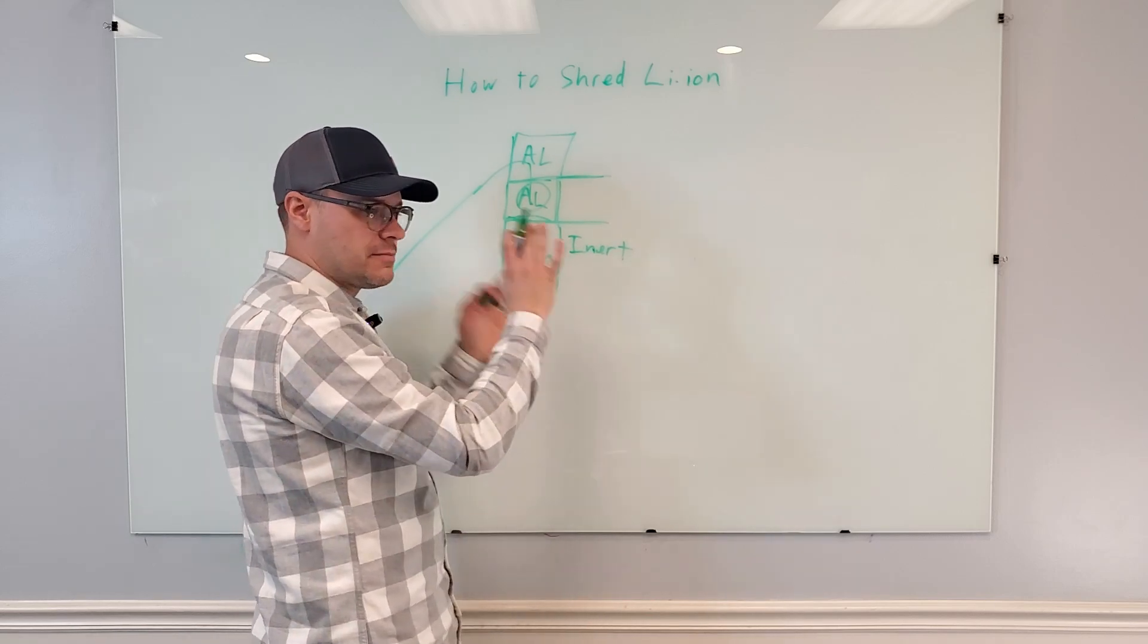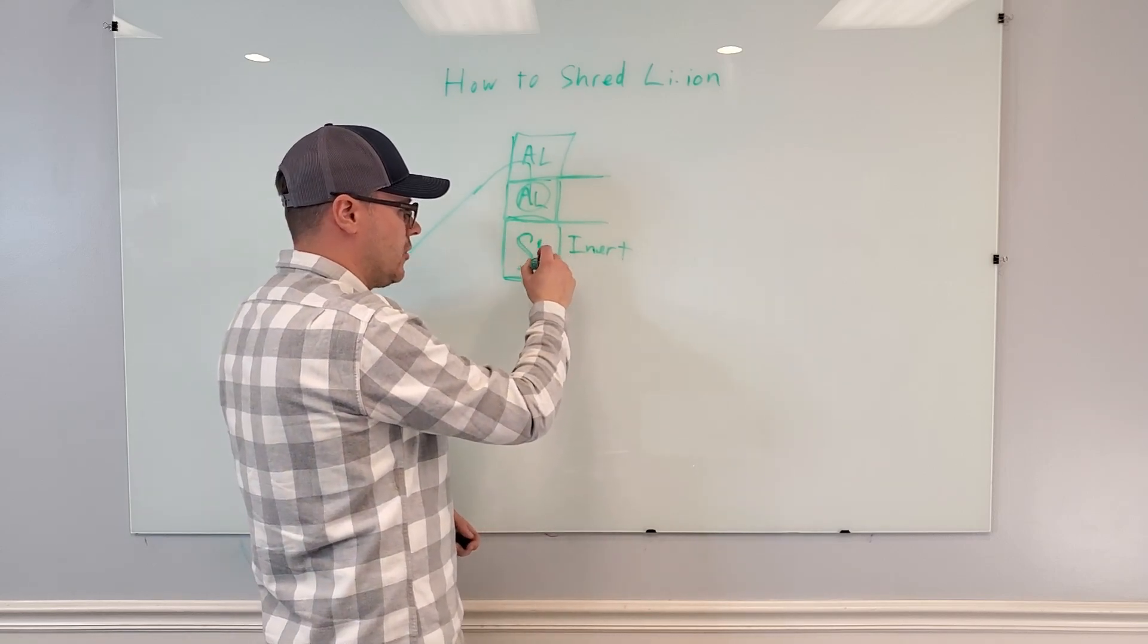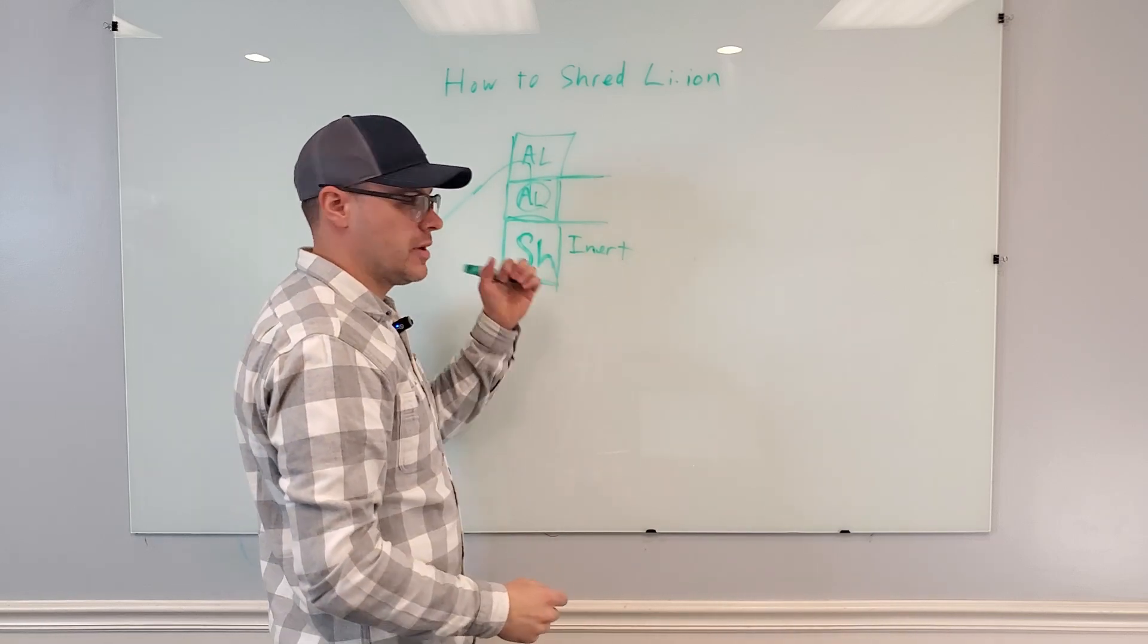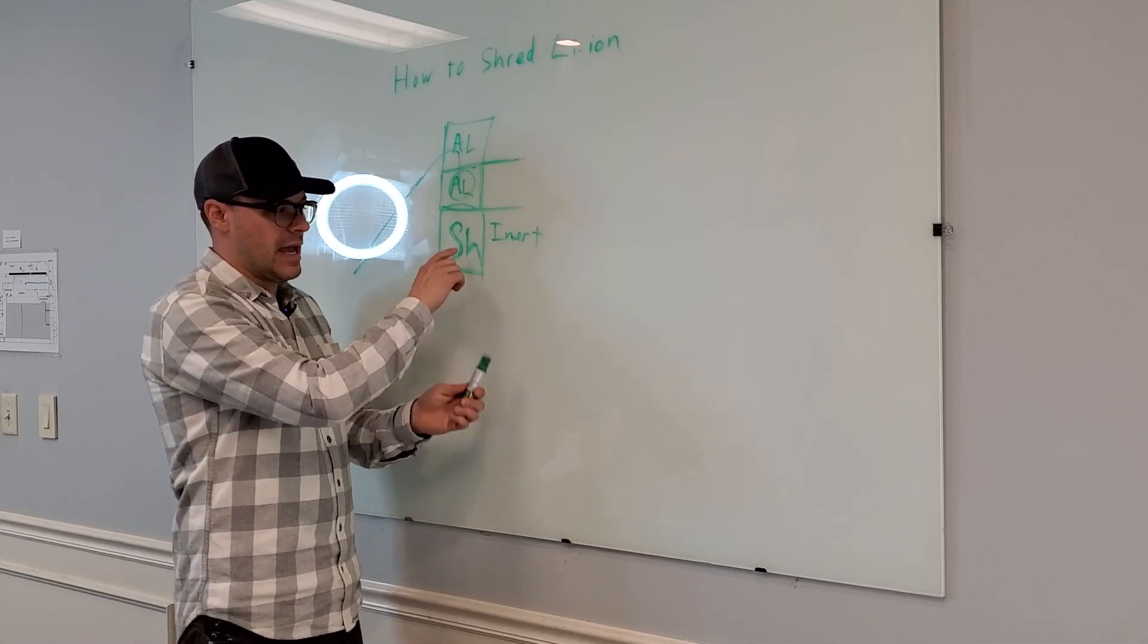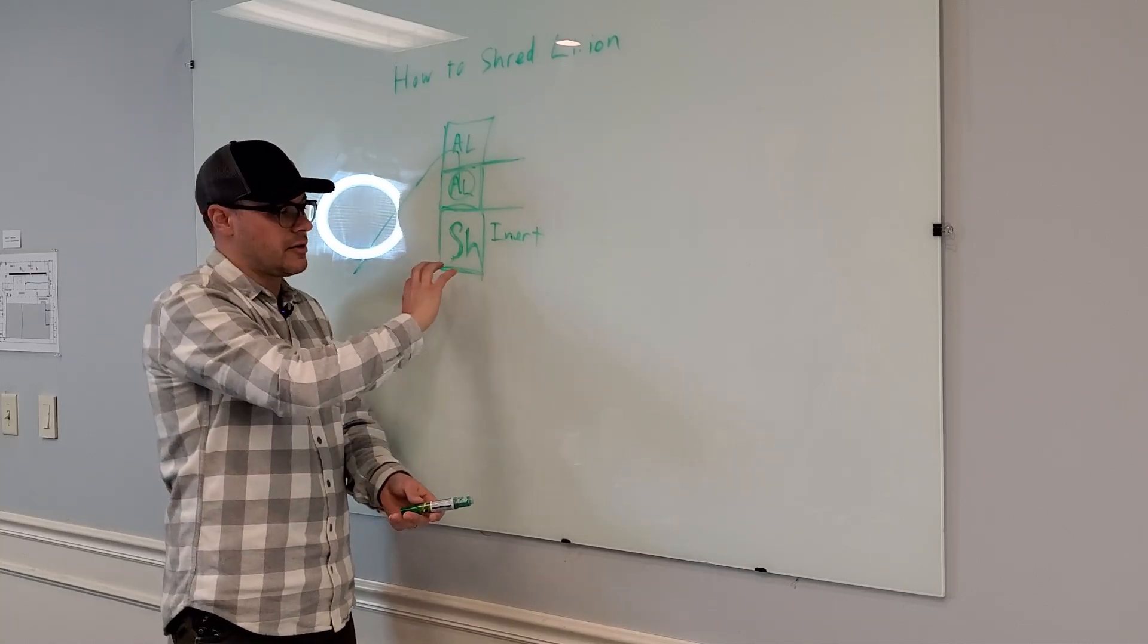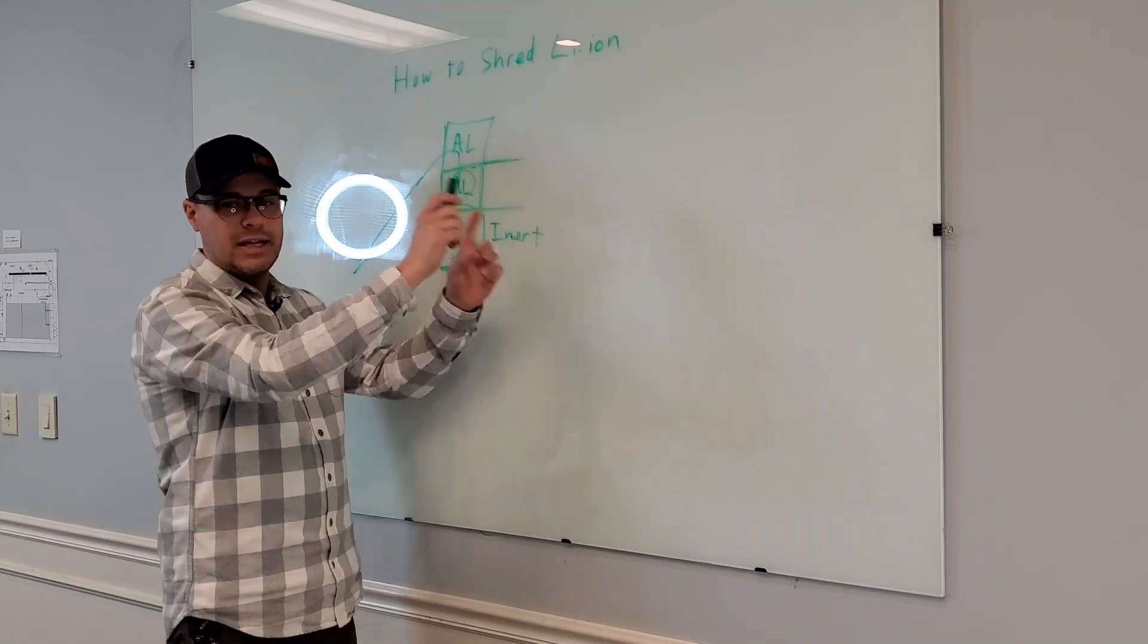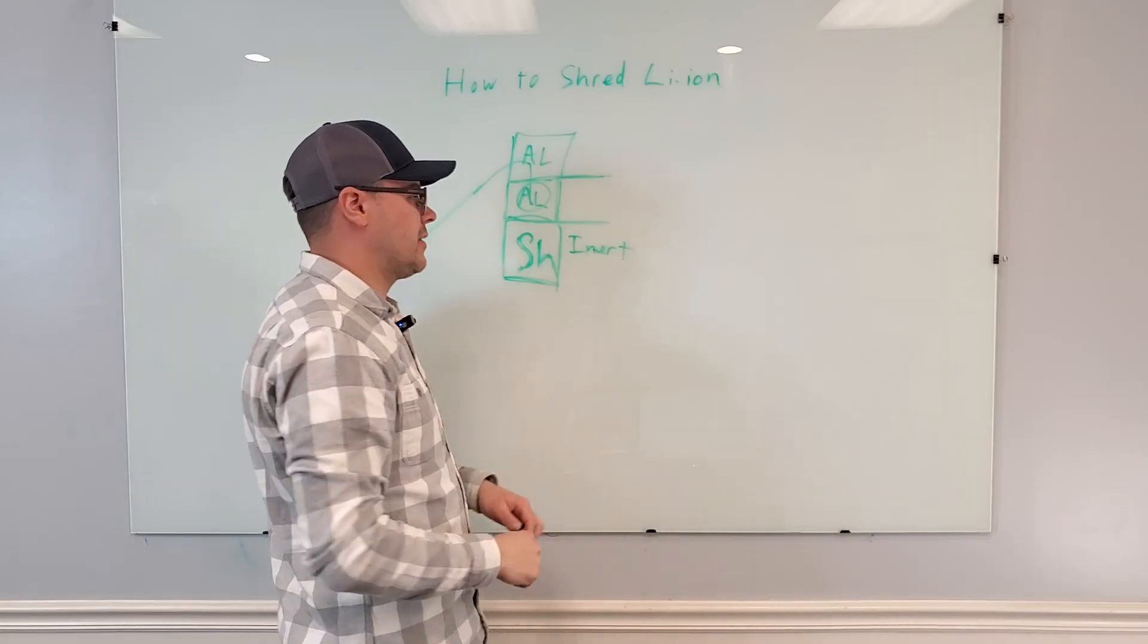But this is for batteries, post-consumer batteries or batteries from recycled batteries from cars and whatnot. So from here, after the material goes through the shredder, you're going to take that material and come out of it and go into the downstream, which is the next step. We'll make another video about that next.